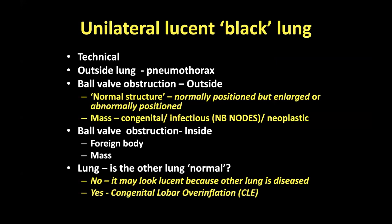Once you've looked at the airways, you need to take it beyond that. We've looked at the black of the trachea and main bronchi; now we look at the lungs. We need to critically evaluate the lungs: is the lung normally black? Have we got symmetrical lucency of the lungs, or is it asymmetrical? Before we start concentrating on things that are white.